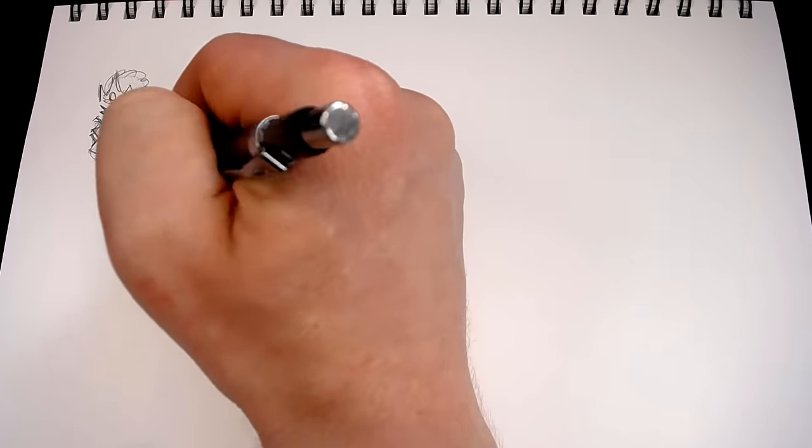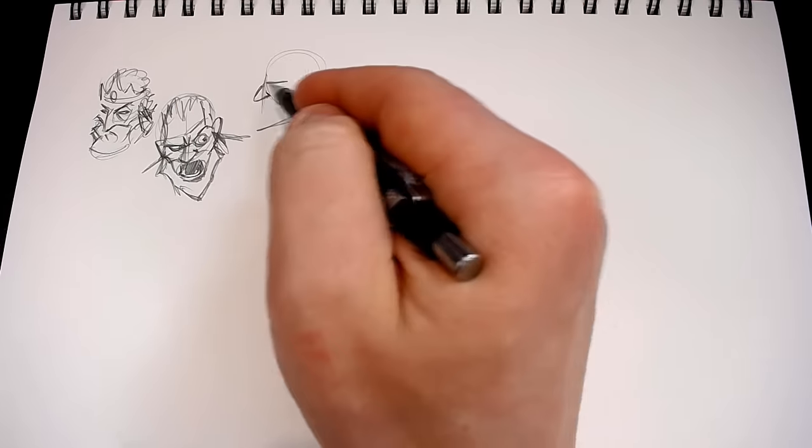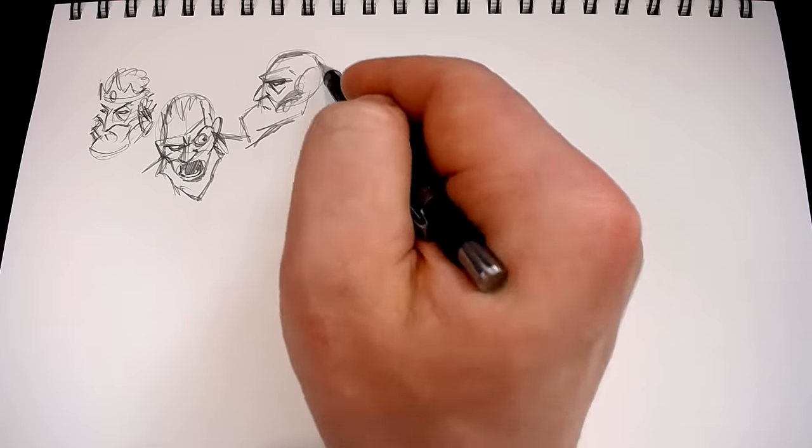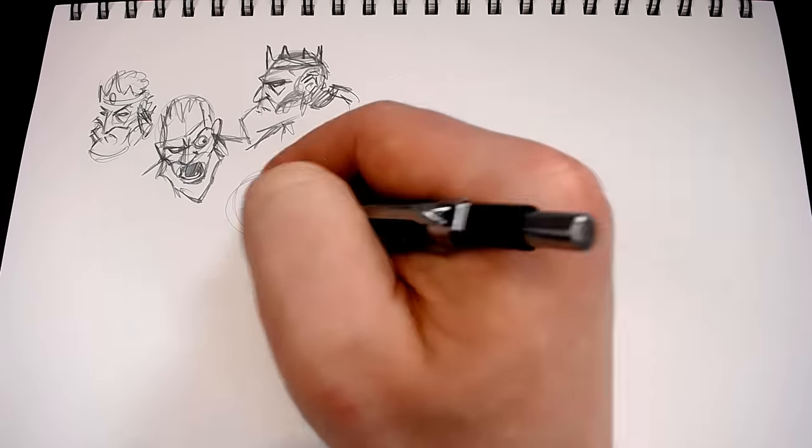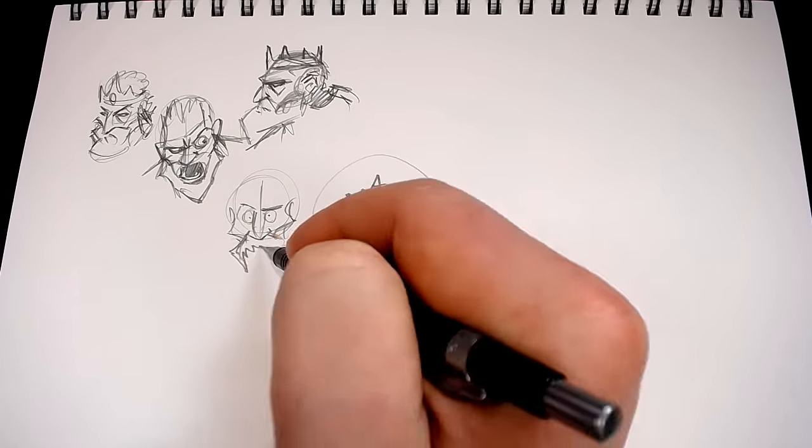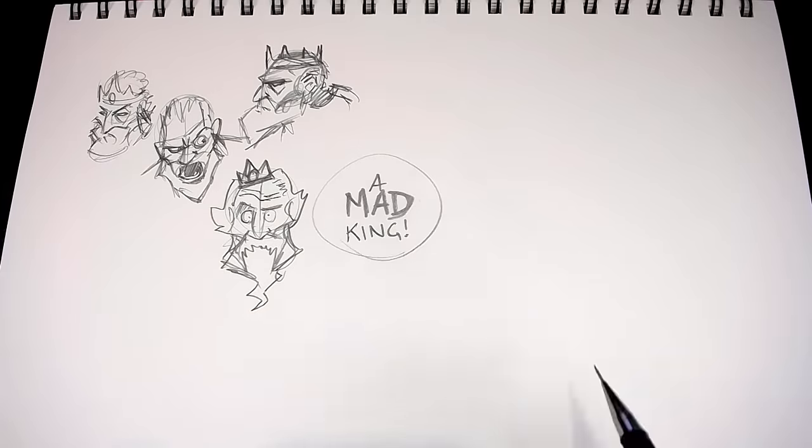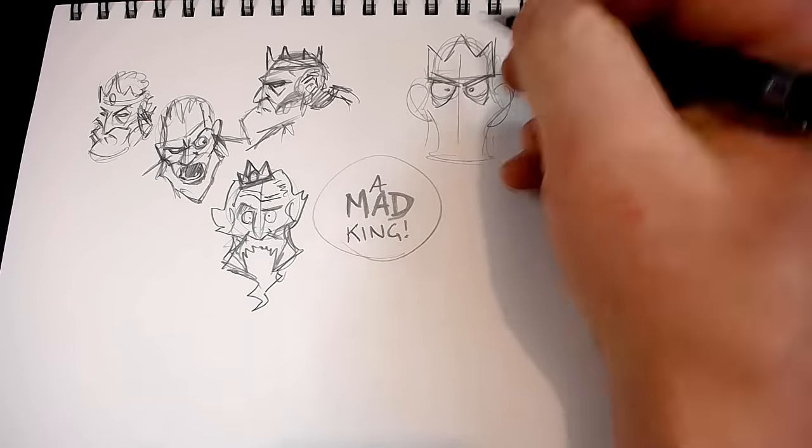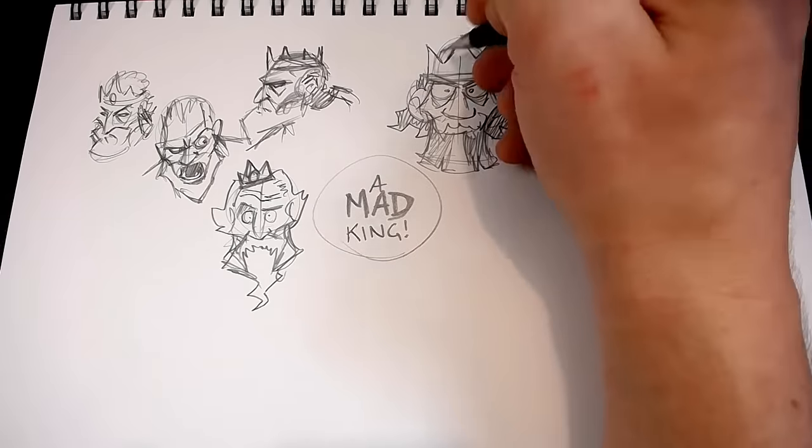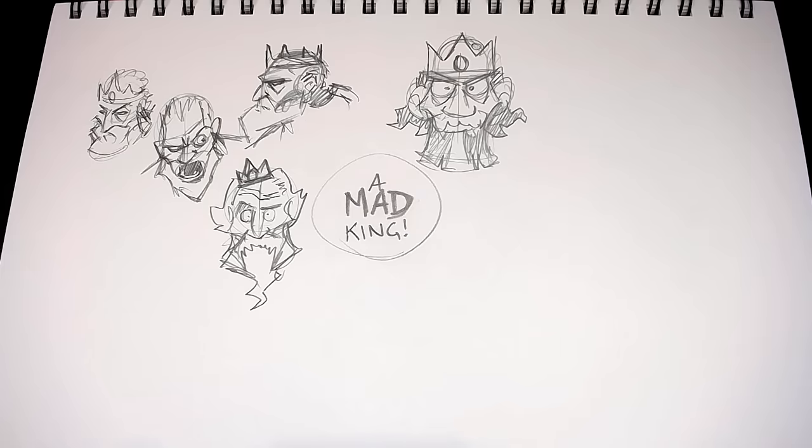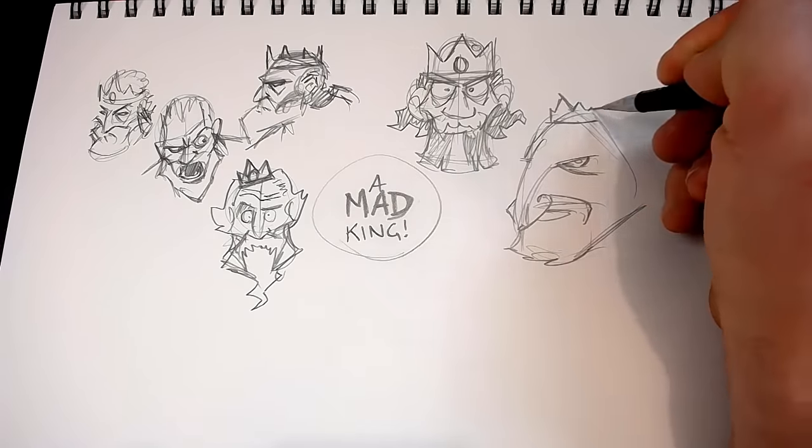Brainstorm sketching is kind of like thinking while you're drawing. If someone tells me to draw a mad king on a piece of paper, I'll most often draw the first thing that comes to mind. The problem is, the first thing that comes to mind is most often the most cliche thing or the most easy thing or predictable and often the least interesting thing. Brainstorm sketching allows you to get the first thing on your mind out of the way and then move on to playing a little bit. Stepping outside the edges of your comfort zone and even trying things you wouldn't think would work because sometimes they do and in a way that might surprise you.